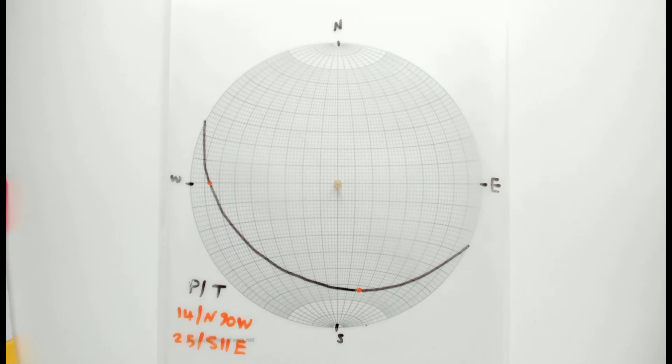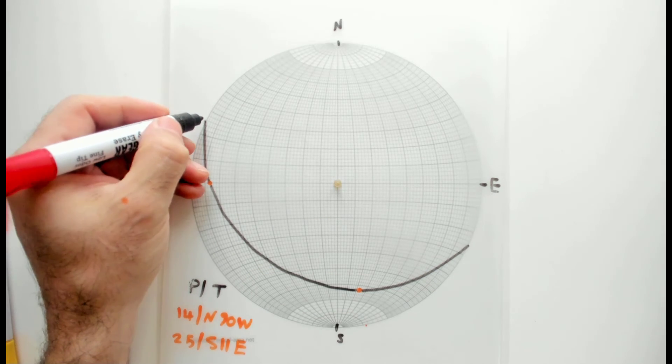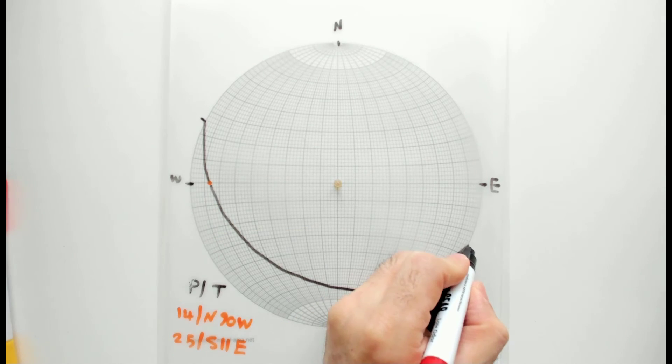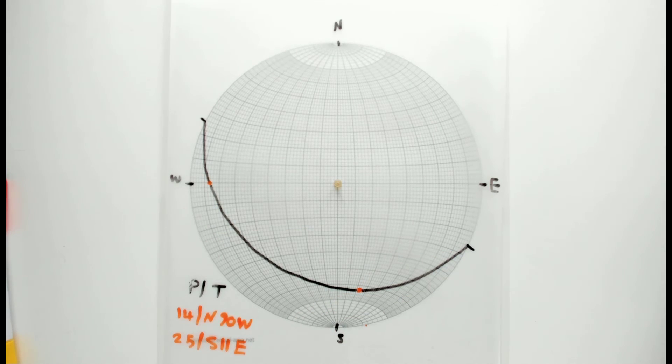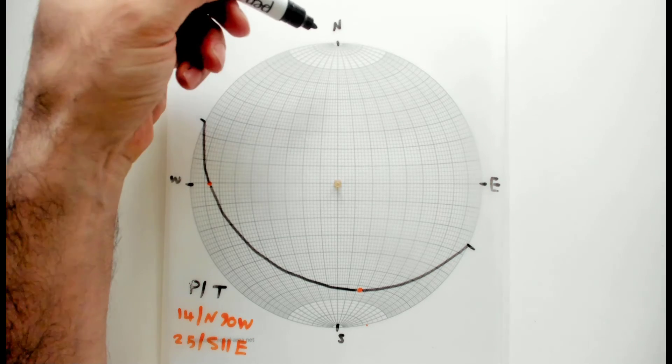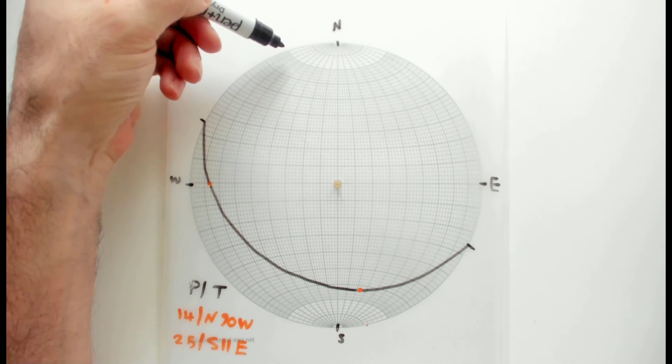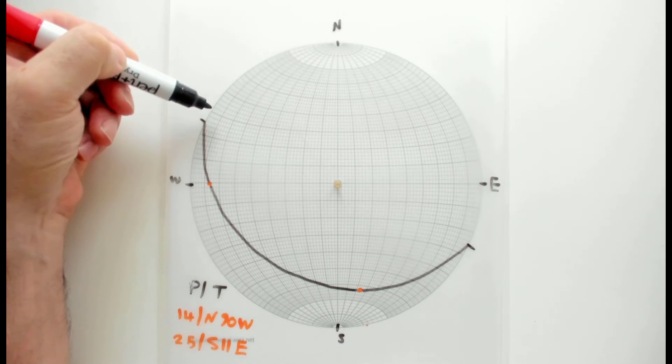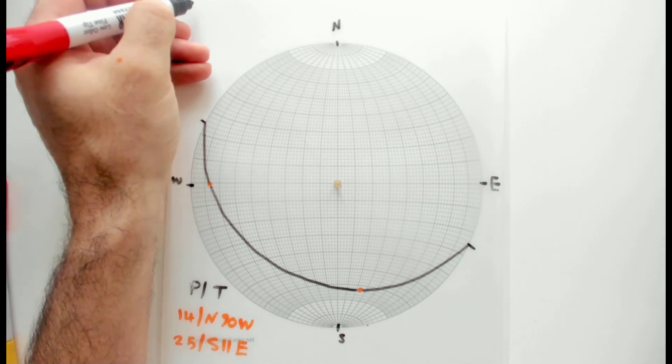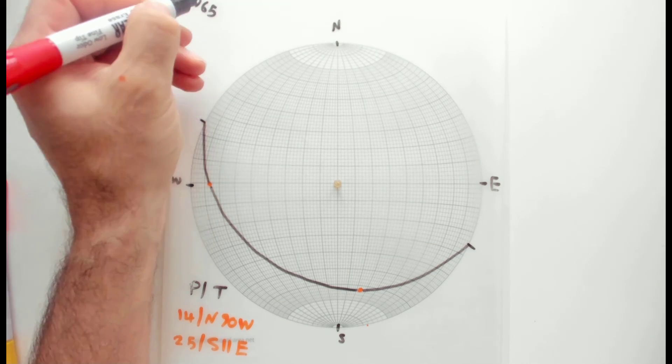You see, these two apparent dips are located on this plane. So if I read the strike and the dip of this plane, then we are done. I'm gonna do it in two different conventional rules. I'm gonna do first with the quadrant convention. Here we have north 10, 20, 30, 40, 50, 60, 65—so north 65 west and is dipping towards southwest.